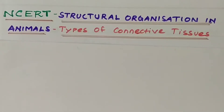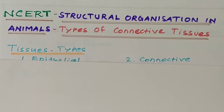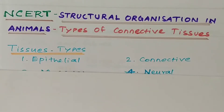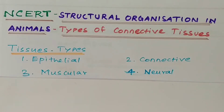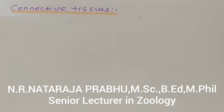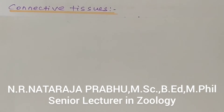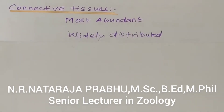Animal tissues are four types: number one, epithelial tissues; number two, connective tissues; number three, muscular tissue; and number four, neural tissues. When compared to the four types of tissues, the connective tissues are most abundant in animal bodies — volume-wise it is more, and it is widely distributed in most parts of the body.